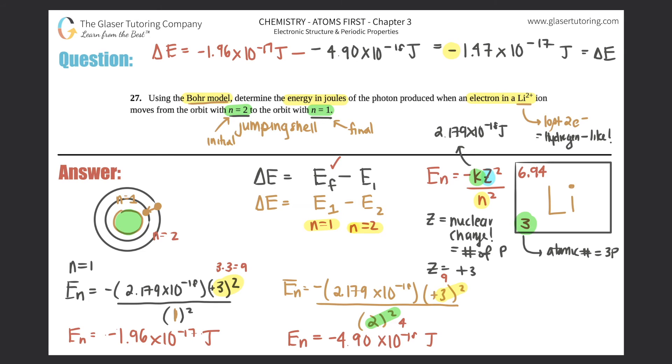This negative just means that the energy was released. And that's always the case. If you're going closer and closer to the nucleus, you will always release energy. So your number will always be negative. And vice versa. If you're going farther and farther away, you'll always absorb energy. So your answer will always be positive. However, if you box this answer off with the negative in it, that would actually be incorrect.